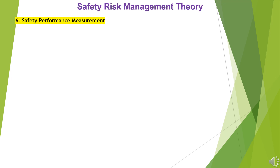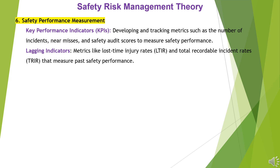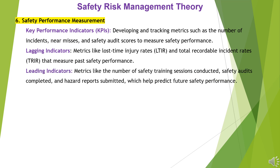6. Safety Performance Measurement. Key Performance Indicators (KPIs): developing and tracking metrics such as the number of incidents, near misses, and safety audit scores to measure safety performance. Lagging indicators — metrics like lost time injury rates (LTIR) and total recordable incident rates (TRIR) — measure past safety performance. Leading indicators — metrics like the number of safety training sessions conducted, safety audits completed, and hazard reports submitted — help predict future safety performance.